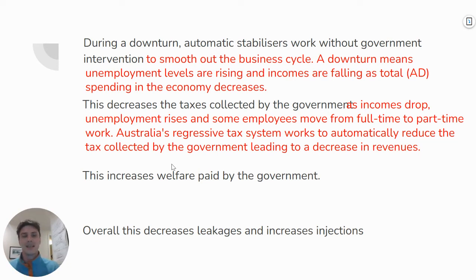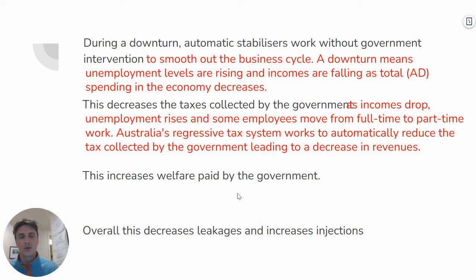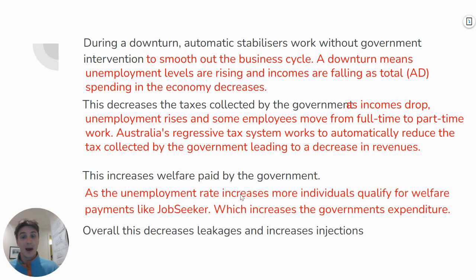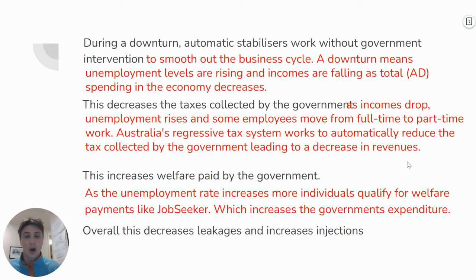The other stabilizer — remember there are two — is welfare paid by the government. Why does welfare paid increase? As the unemployment rate increases, more individuals will qualify for welfare payments such as JobSeeker, which is literally a payment for people who are unemployed and seeking work. This increases government expenditure. Overall, this decreases leakages and injections — although welfare is not technically an injection, it will eventually get injected into the economy.